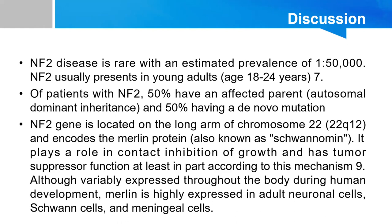NF2 disease is rare with an estimated prevalence of 1 in 50,000. It usually presents in young adults in the age group of 18 to 24 years. Of patients with NF2, 50% have an affected parent — that is, they have autosomal dominant inheritance — and 50% have a de novo mutation. NF2 is located on the long arm of chromosome 22 and encodes the Merlin protein. It plays a role in contact inhibition of growth and has tumor suppressor function.